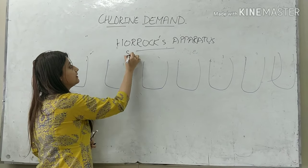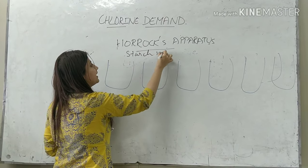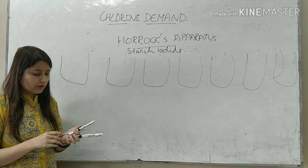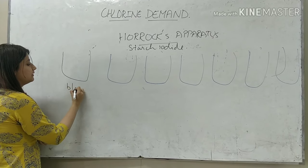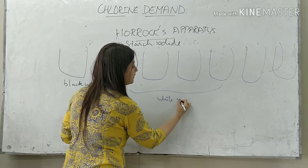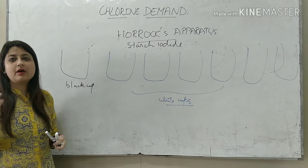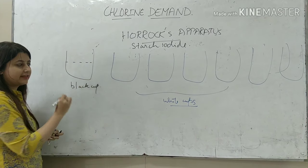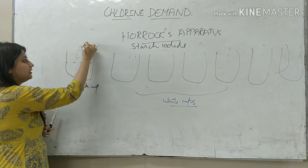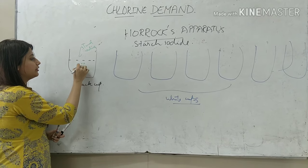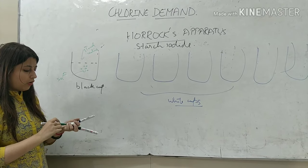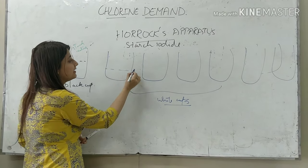The indicator that is used is starch iodide. All these cups contain the water which is required to be disinfected. In the black cup we add the water to be disinfected along with starch iodide. The starch iodide with the water makes a solution — the work of the black cup is to prepare this solution.